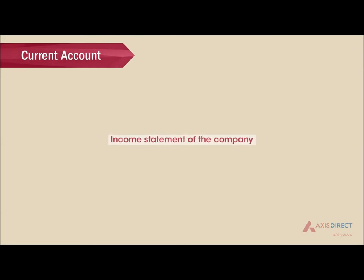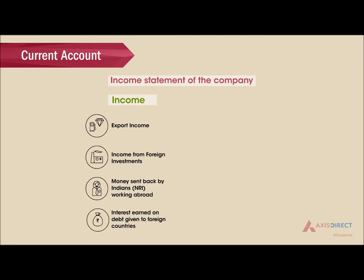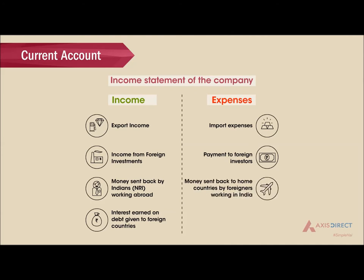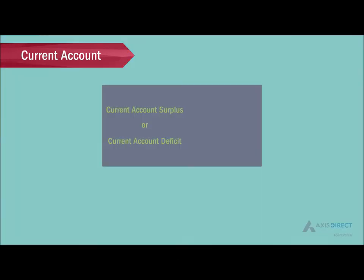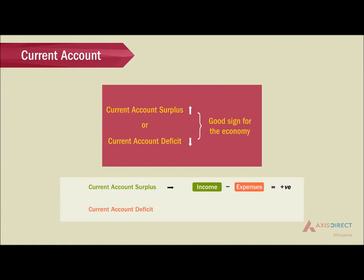Now let us take a look at the current and capital account components. The current account looks similar to the income statement of a company, where income components include export income, income from foreign investments, money sent back by Indians working abroad, and interest earned on debt given to foreign countries. These are deducted by expense components which include import expenses, payment to foreign investors, money sent back to home countries by foreigners working in India, and interest paid on debt taken from foreign countries. If the current account surplus is increasing or the deficit is decreasing, it is a good sign for the economy. Current account surplus is when income is more than expenses; current account deficit is when expenses are more than income.